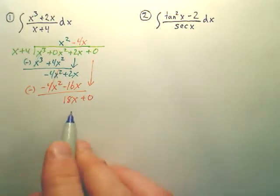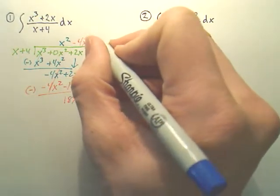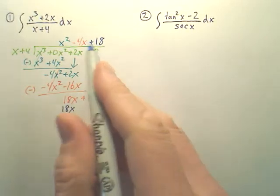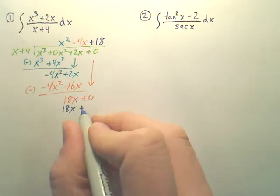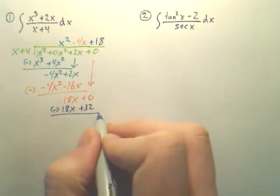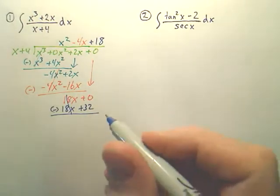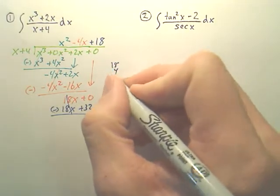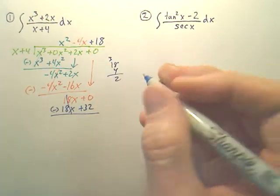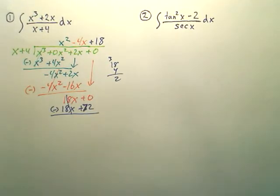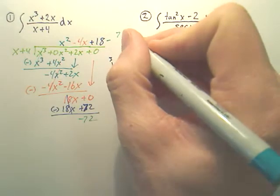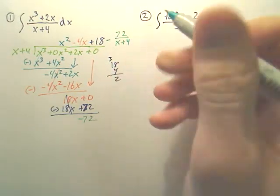And to get 18x, I need to multiply x by 18. So 18 times x is 18x. 18 times 4 is 72. So my remainder, when I subtract, is negative 72. So this is a minus 72 over x plus 4.